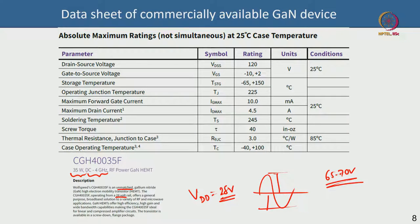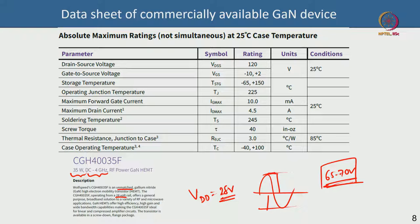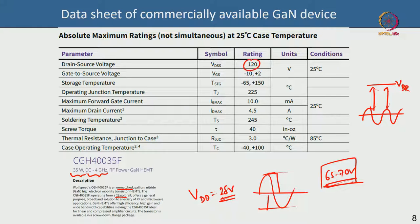The maximum source-drain voltage here is 120 V, so with a 28 V swing, there is a large margin — good for reliability. However, you cannot arbitrarily push breakdown very high, because breakdown depends on gate-to-drain distance. If that distance is very large, your cutoff frequency drops because electrons take longer to transit — this is a fundamental trade-off.